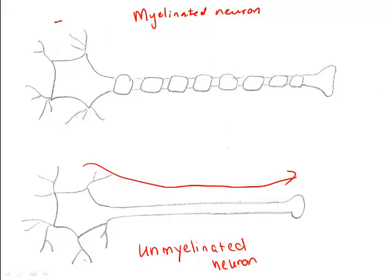The wave of depolarization still begins at the dendrite end, but it actually skips the part where the myelin sheath is — where the Schwann cells are — and it jumps past it. So we have depolarization only occurring at the nodes of Ranvier.